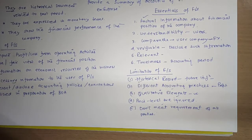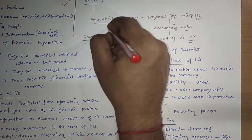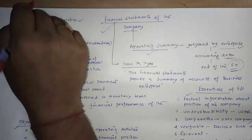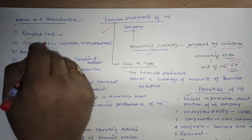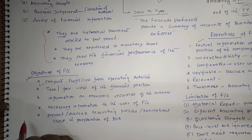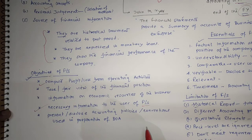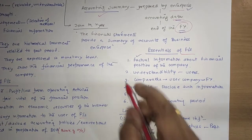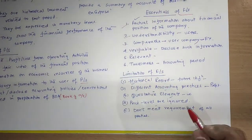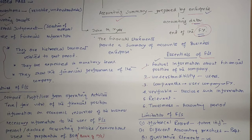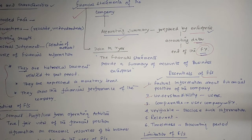Today we discussed the financial statement of a company — it is an accounting summary prepared by the enterprise at the end of the financial year. We discussed its nature and characteristics: recorded facts, conventions, and accounting concepts. We covered the objectives: profit and loss computation, true and fair view of financial position, and necessary information. We also discussed the essentials — factual information, understandability, comparability — and finally the limitations of financial statements. In the next video we will discuss the practical part of financial statements. Stay connected, kindly subscribe to my channel. Thank you.